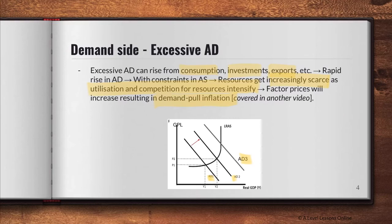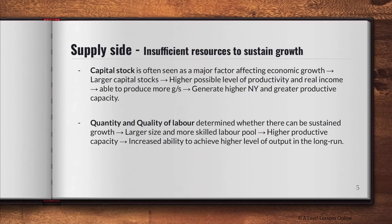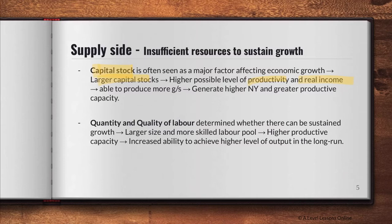Those are the two demand-side extremes — when growth falls due to global recession, and when growth rises excessively due to excessive AD. On the supply side, insufficient resources to sustain growth can also lead to undesirable rates of growth. Capital stock is often seen as a major factor — when you have larger capital stocks, there will be a higher possible level of productivity and real income, allowing you to produce more goods and services, generating higher national income and greater productive capacity.